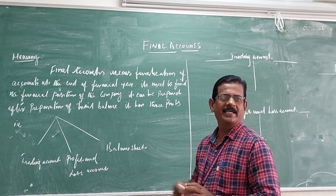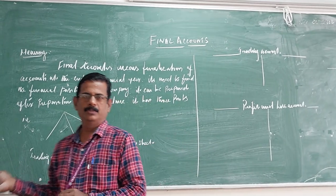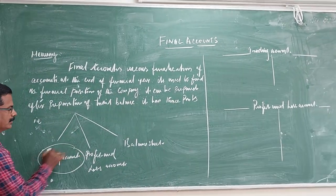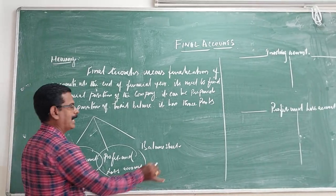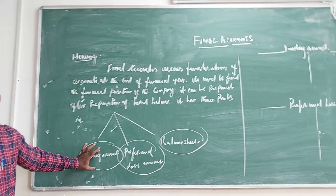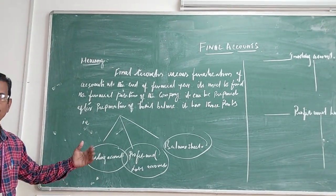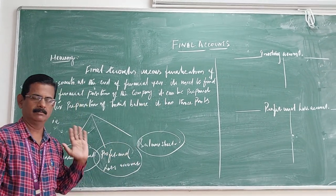So it has three parts. One is the trading account, then the other one is the profit and loss account, then balance sheet. So what is your idea about trading?